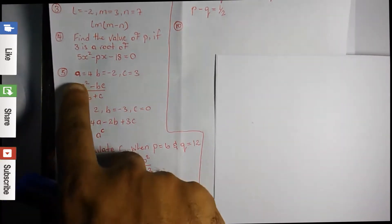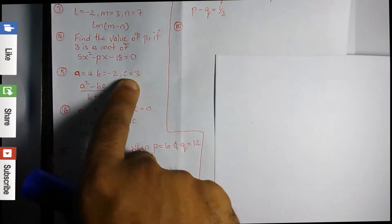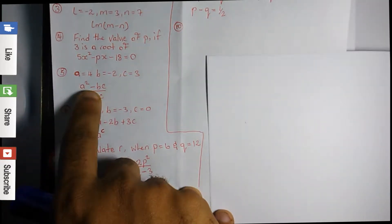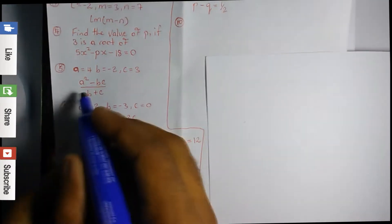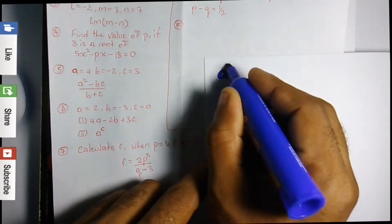So with this question we have a = 4, b = -2, c = 3. We need to solve a² - bc over b + c.